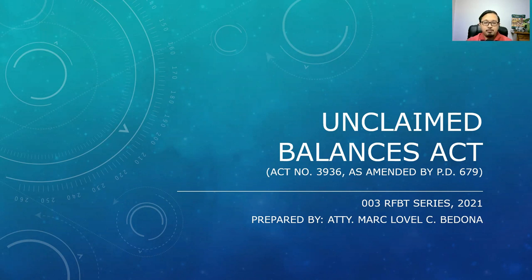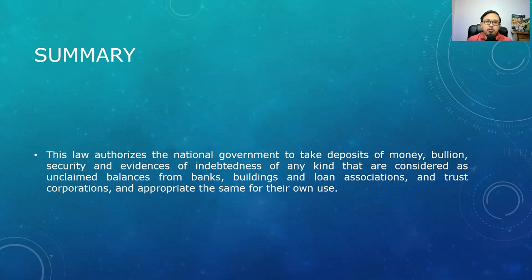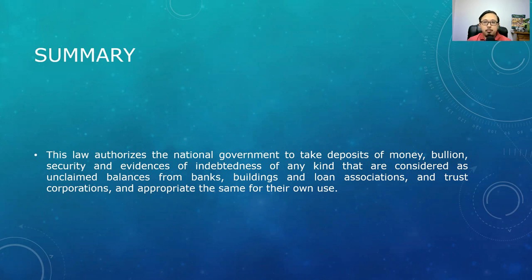Here's a summary of this law. This law authorizes the national government to take deposits of money, bullion, security, and evidence of indebtedness of any kind that are considered as unclaimed balances from banks, buildings and loan associations, and trust corporations, and appropriate the same for their own use. So, it's one way for the government to take the money of the people, and it's a legal form of taking. However, they have to satisfy certain requirements before they can do so.